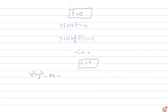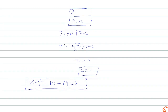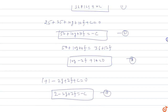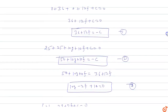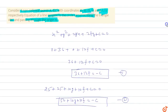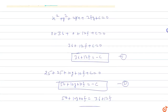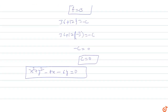Substituting g = -2, f = -3, and c = 0 into the general circle equation gives: x² + y² - 4x - 6y = 0. This is the equation of the circumscribed circle. Now we need to find the equation of the tangent from the origin to this circle.